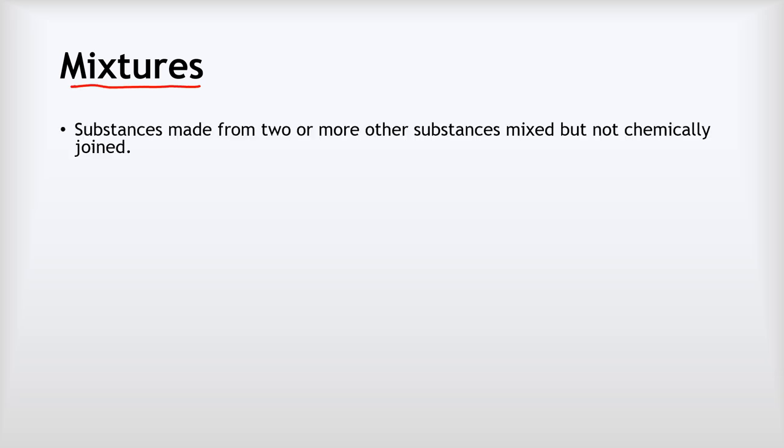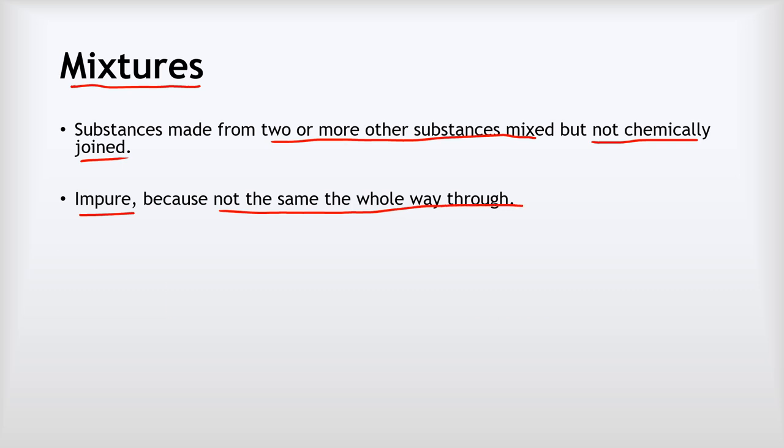Our final type of substance we're going to talk about is a mixture. This is the last bit of our basics presentation. So mixtures are substances made from two or more other substances mixed, but not chemically joined. Because of this, they are impure, because they are not the same the whole way through.